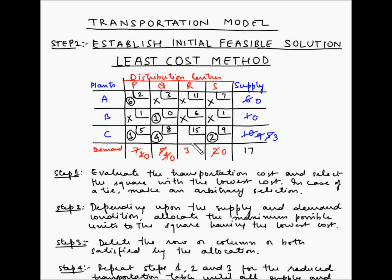The last box available which is unallocated is CR. The demand is 3 and supply available is 3, so we will allocate 3 units here. With this allocation, the supply becomes 0 and the demand at R also becomes 0. We have now allocated all the supply and demand. This is our initial feasible solution using the least cost method.